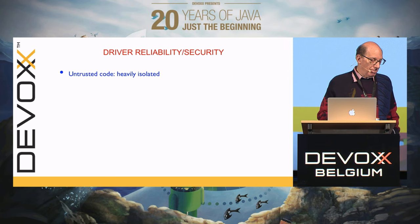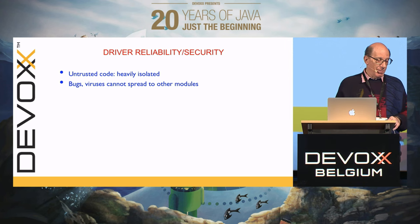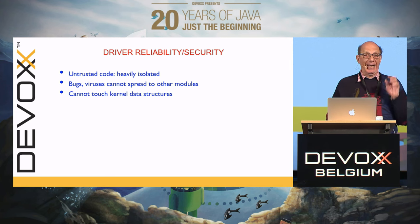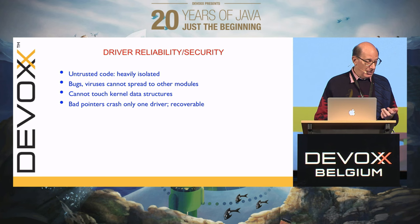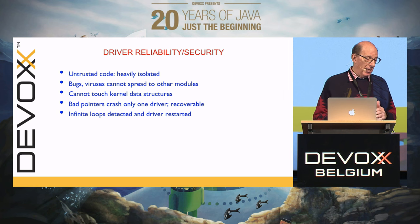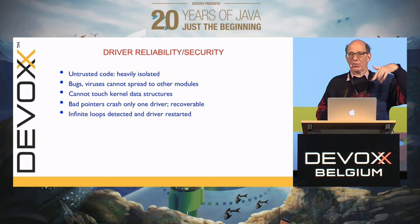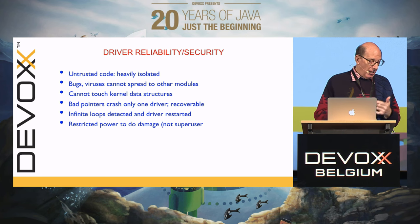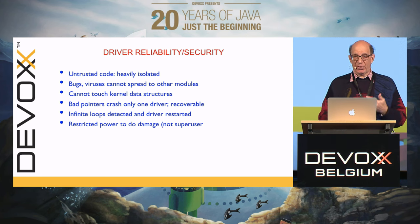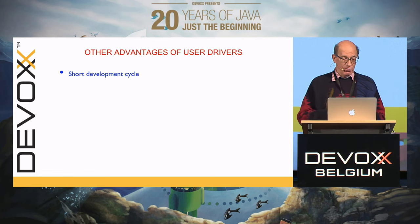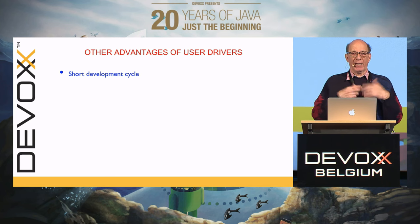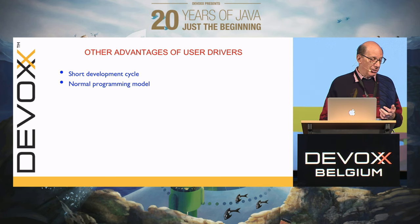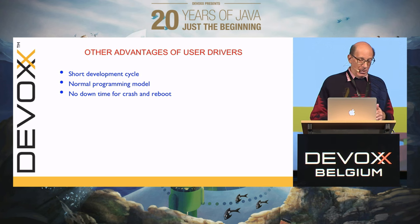Driver reliability: untrusted code is heavily isolated in user processes. Bugs and viruses can't spread from one module to another easily. They can't touch the kernel data structures. Bad pointers can only cause one process to crash, which is recoverable in many cases. Infinite loops can be detected — if an OS piece gets into a loop and doesn't respond to pings, the reincarnation server knows. There's restricted power to do damage because they're not superuser. There are also development advantages: short development cycle, you can use debuggers, there's no need for rebooting the computer, and good flexibility.